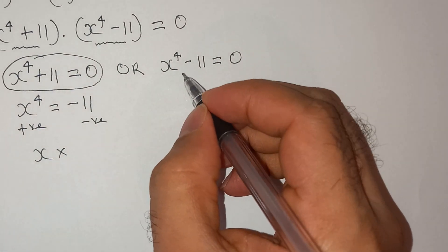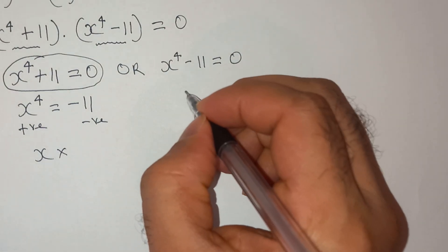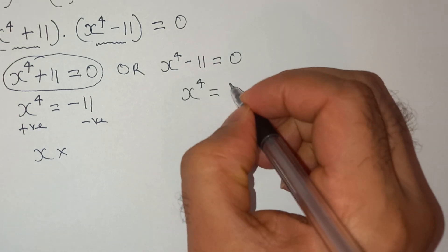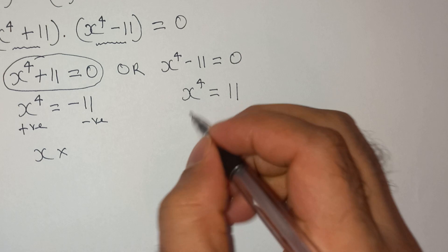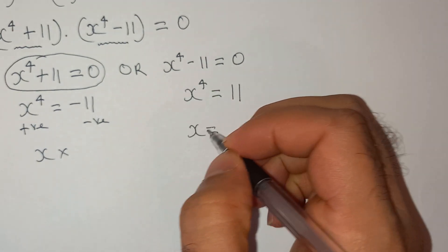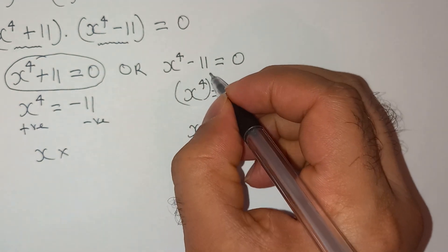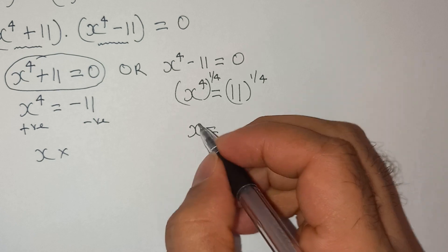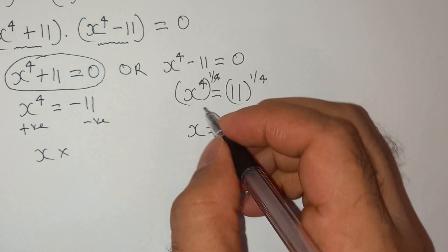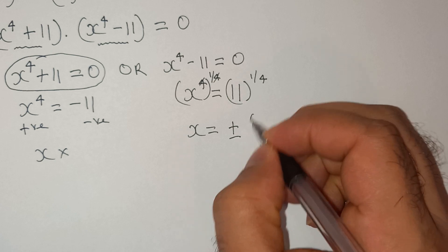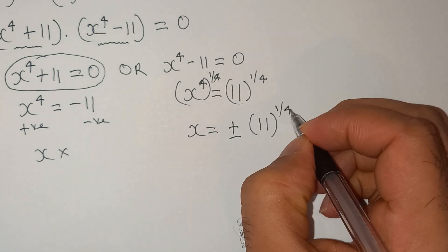So let's go back to this equation, which is x power 4 equals to 11. This can be written as x equals to, we can put the power 1 by 4 on both sides. So this 4 and 4 will nullify, so we have x, and this will be plus minus 11 power 1 by 4.